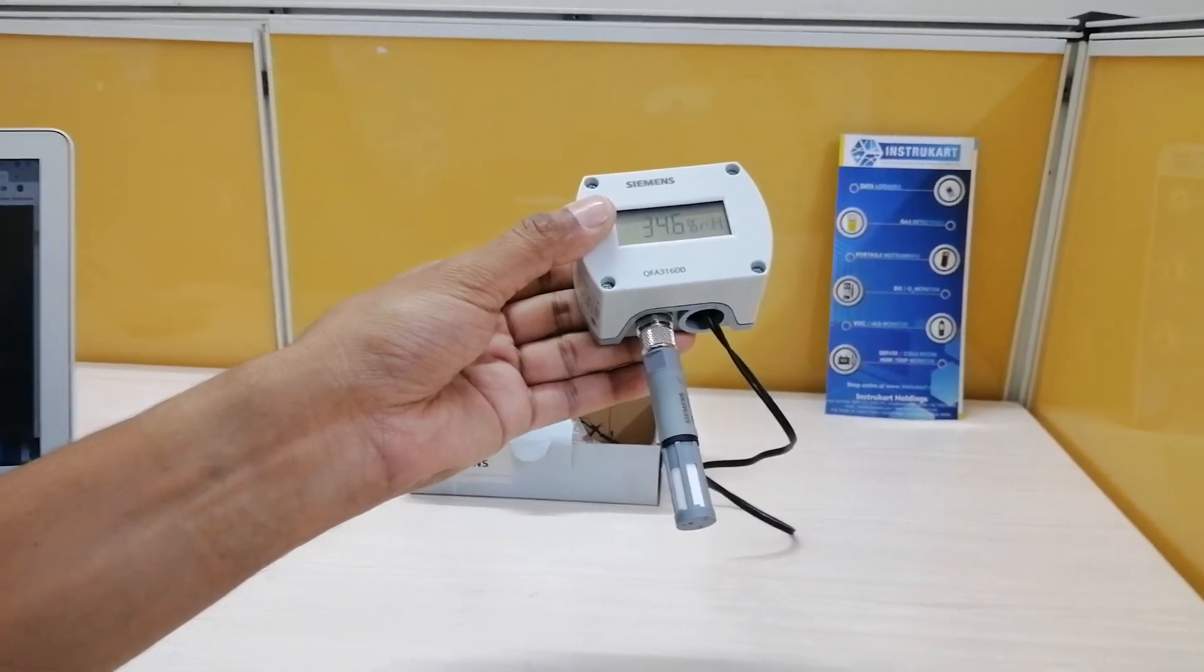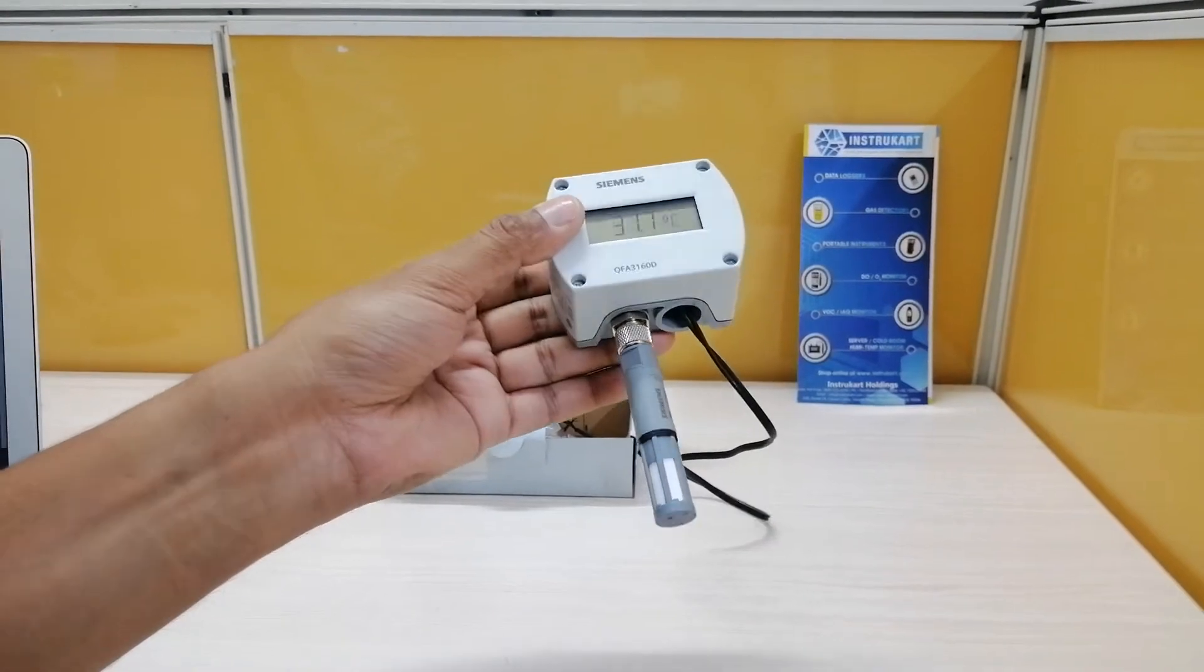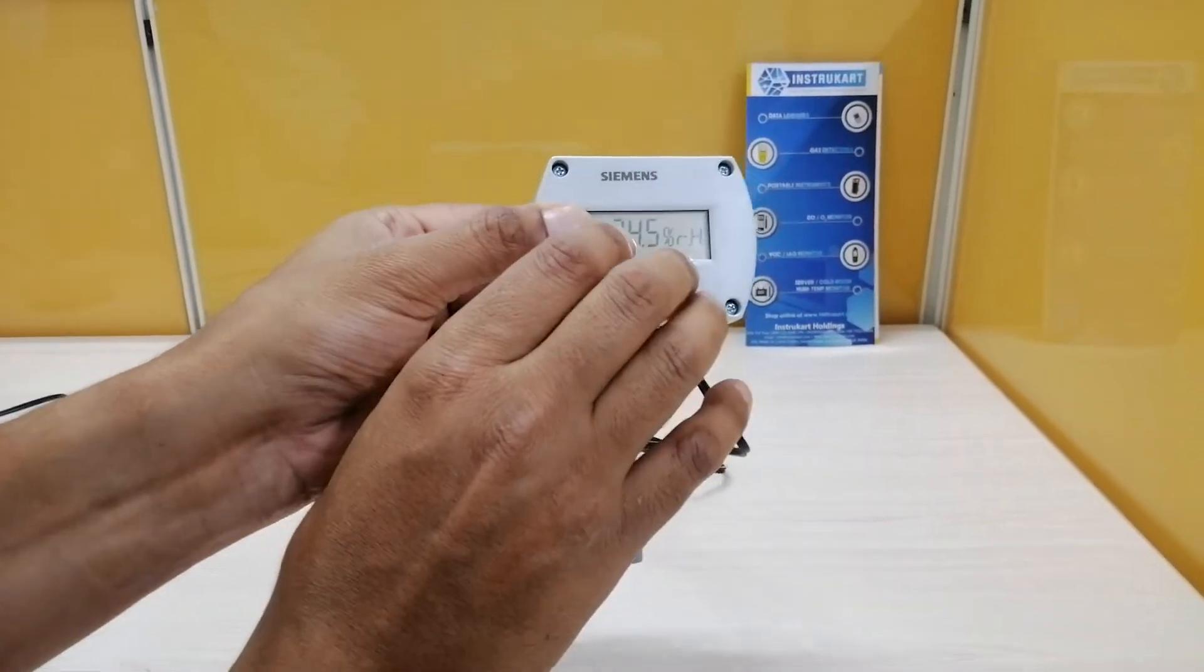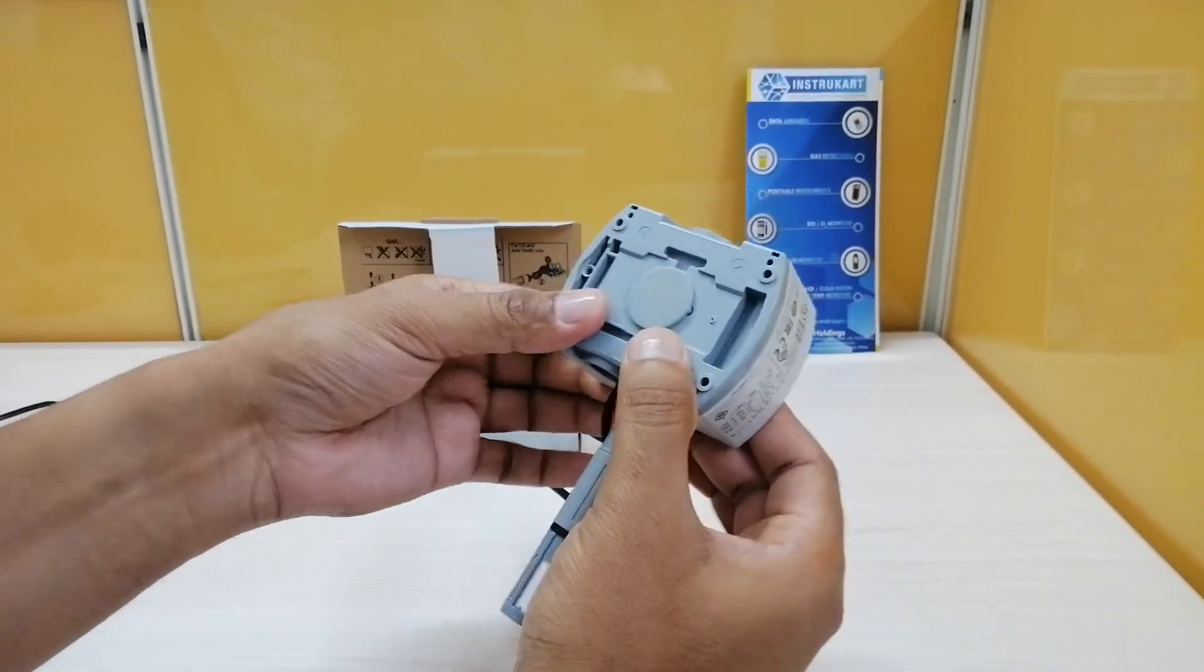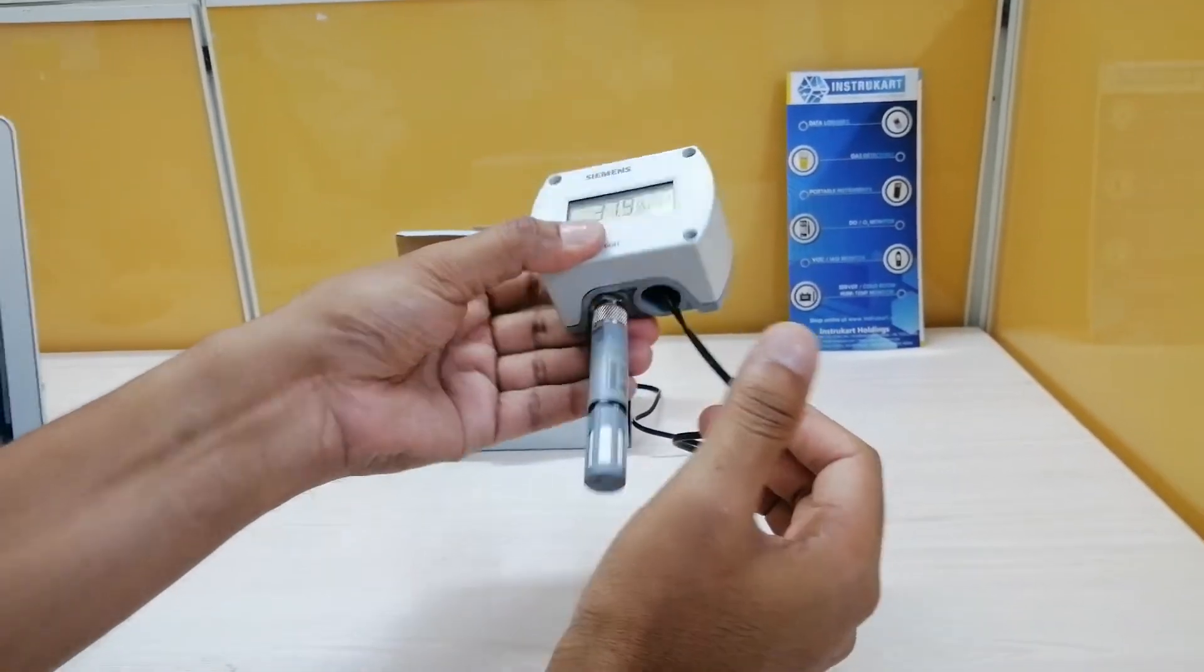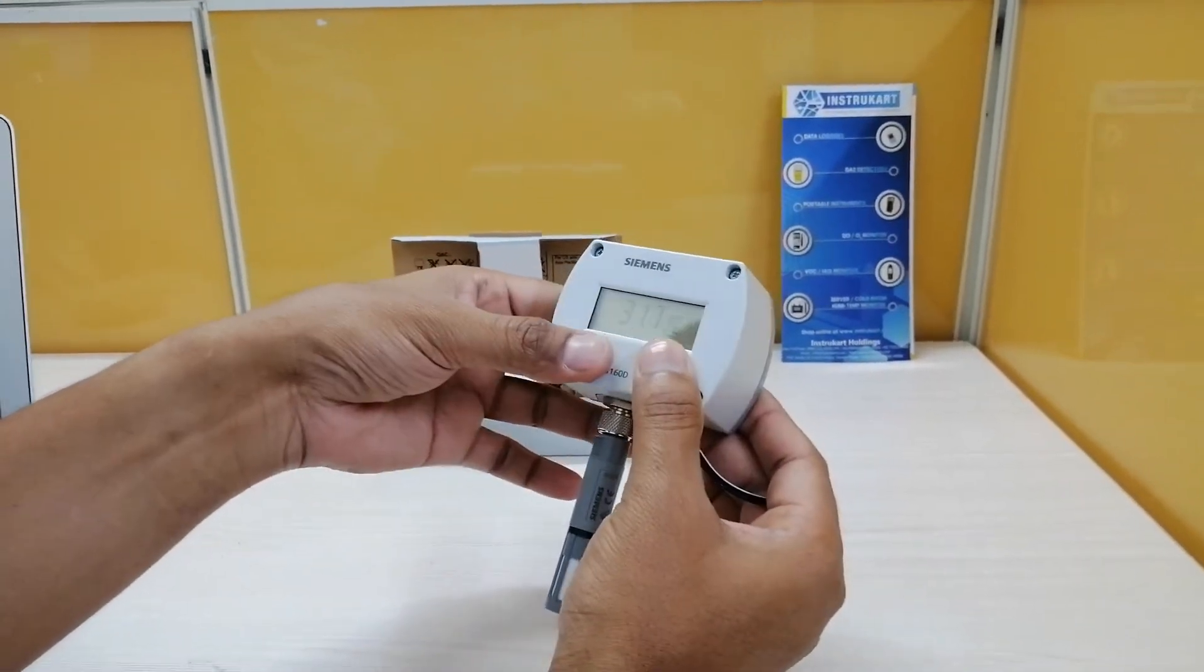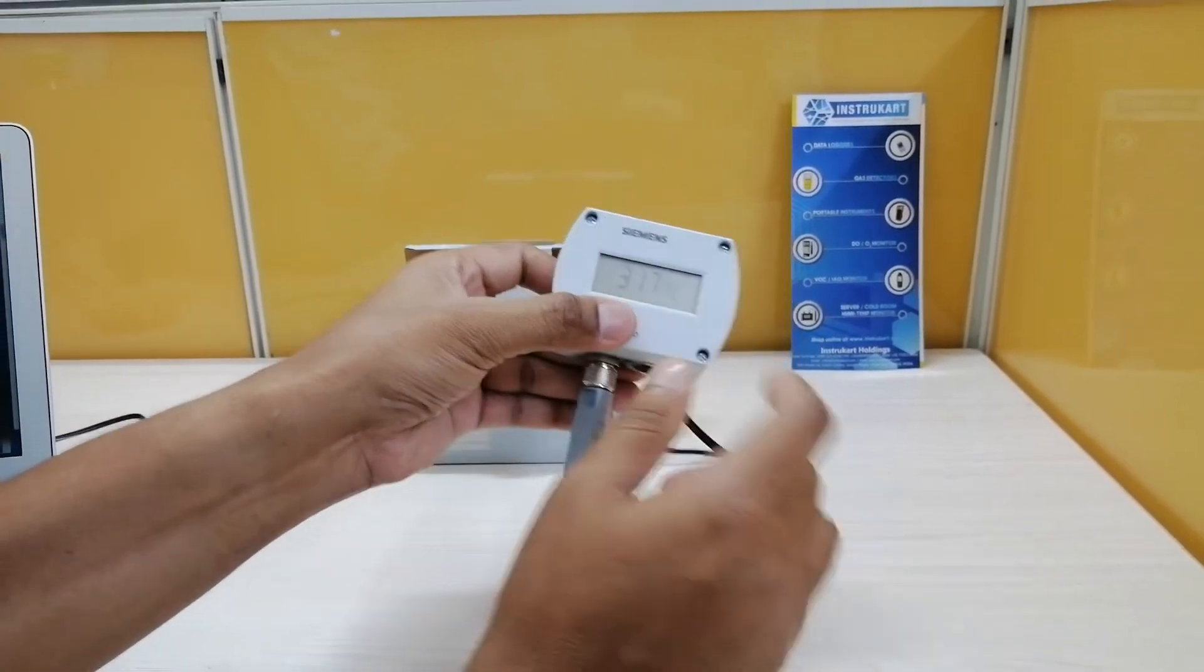It has a temperature signal output of 4 to 20 milliamps or 0 to 10 volts DC. The humidity measuring signal output is the same, 4 to 20 milliamps and 0 to 10 volts. Operating voltage is AC 24 volts or DC 13.5 to 35 volts.